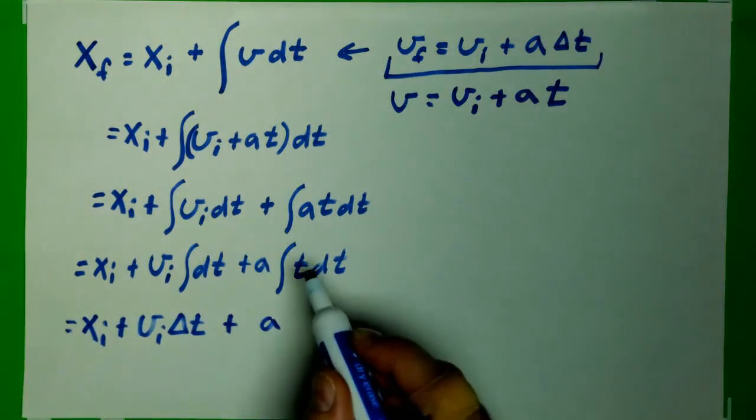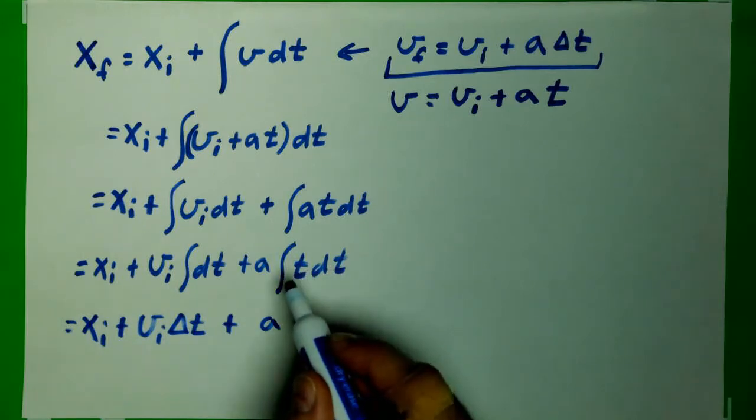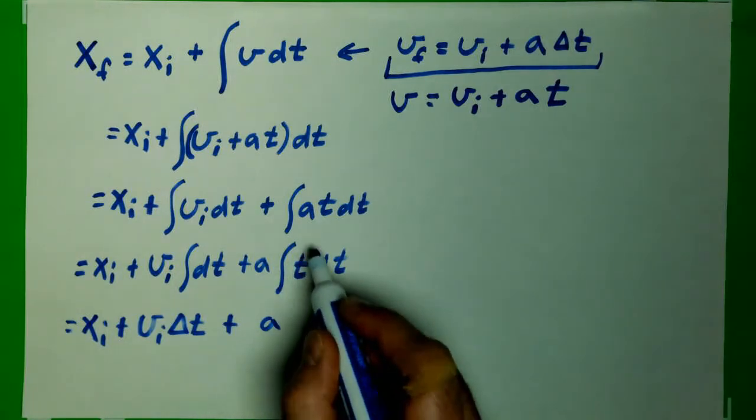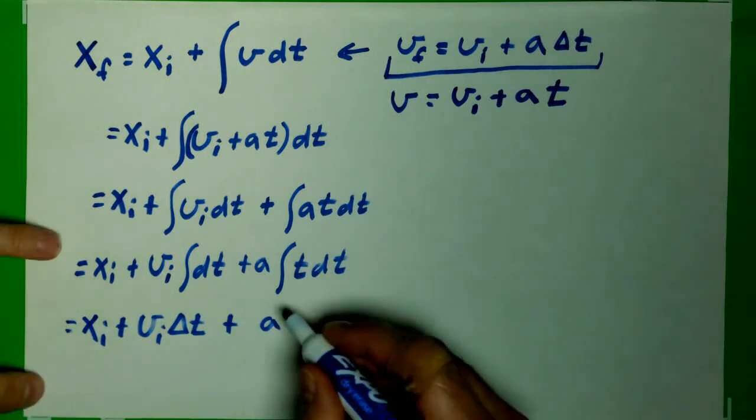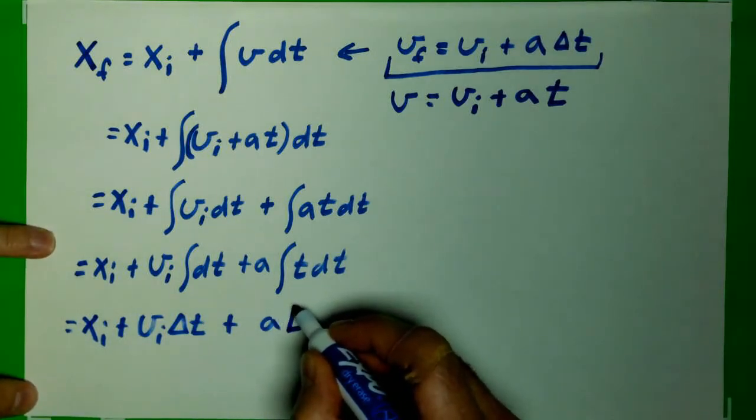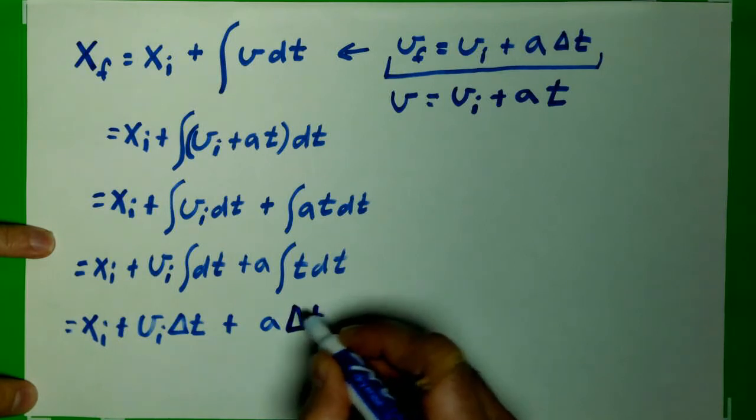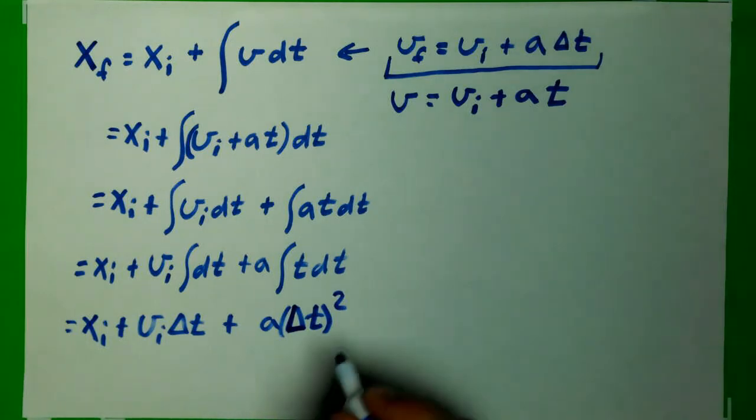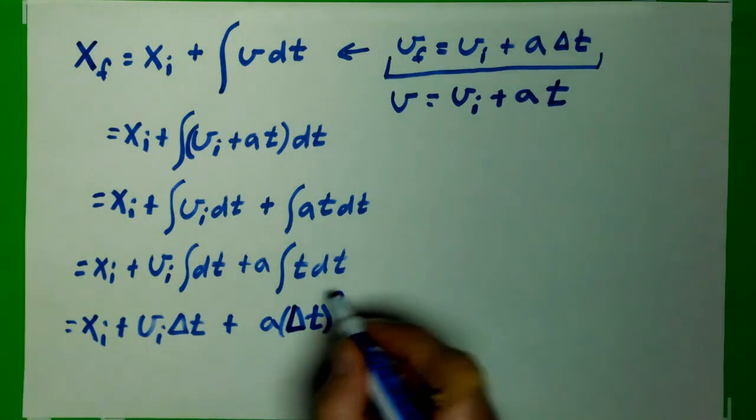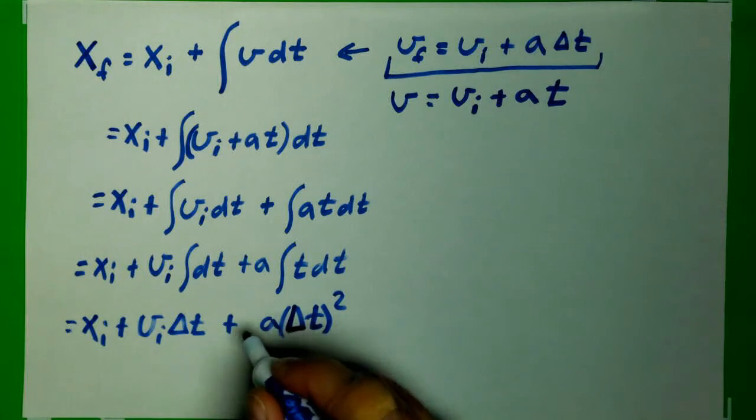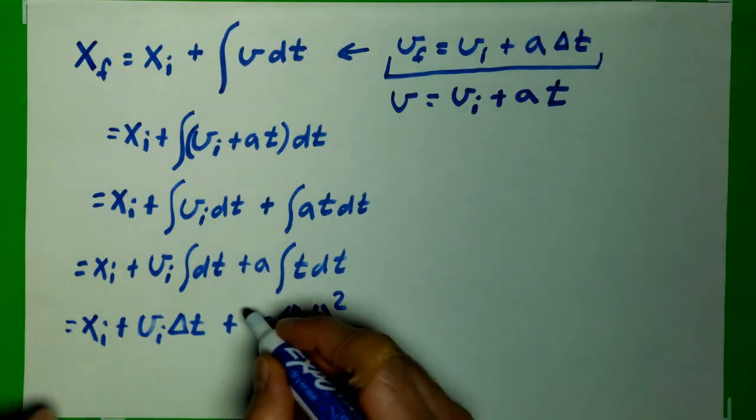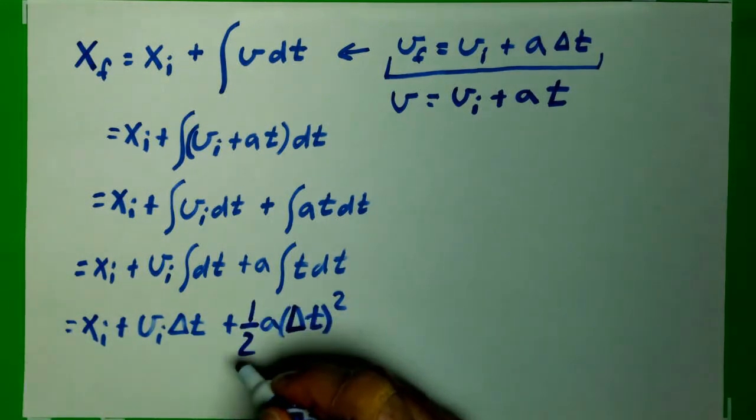Now, the integral of time, with respect to time, is the reverse of a derivative. So I always like to do my integrals by saying the derivative of what would give me time to the first power. Well, I know that's going to be time to the second power. I'm going to go ahead and plug in my delta t, because it's going to be the total time. It's going to be time to the second power. But if I take the derivative of that, the 2 would have come down, and I'd have a 2a delta t, which I don't have a 2. Which means I must have had a half out front to cancel that additional 2.